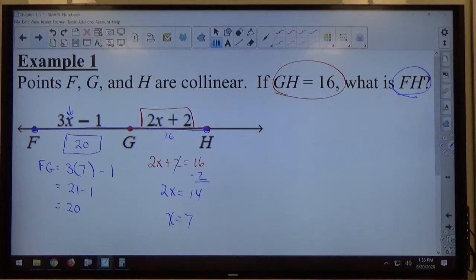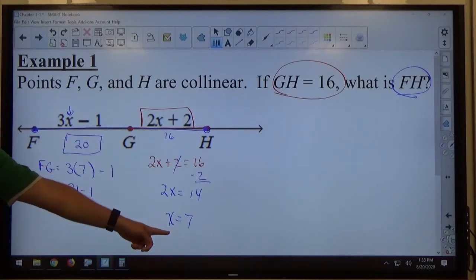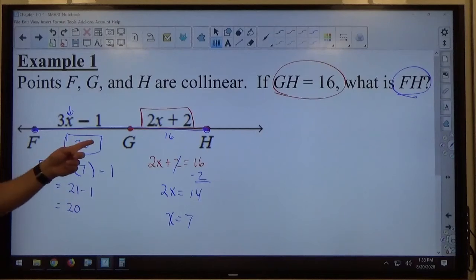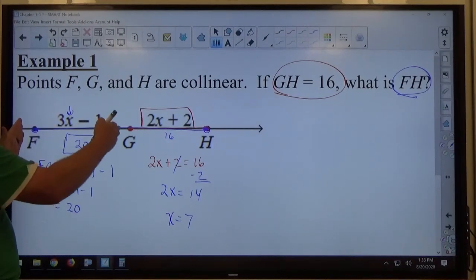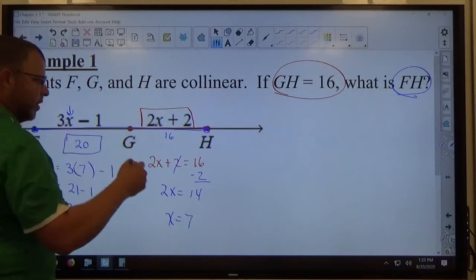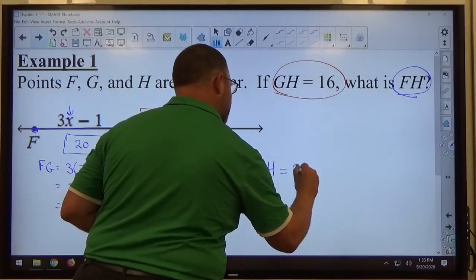So just like that, I used this fact to figure out X. I figured out X's value to figure out how long FG was. Once you know FG is 20, my brain tells me that 20 plus 16 equals 36. So I can see that FG plus GH, 20 plus 16 is FH, FH equals 36.